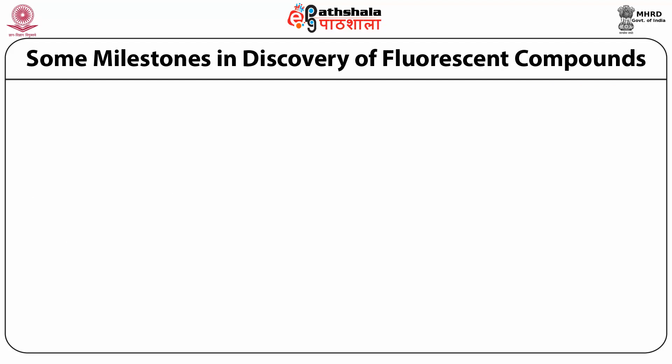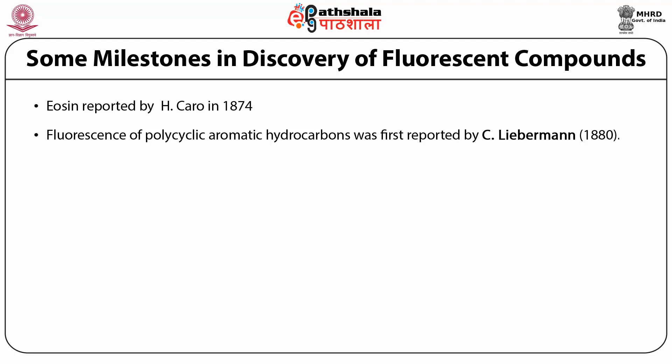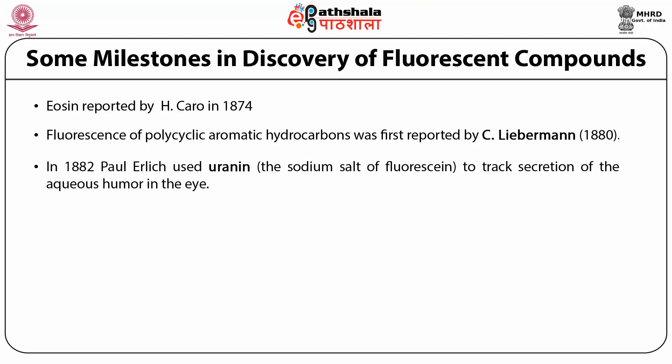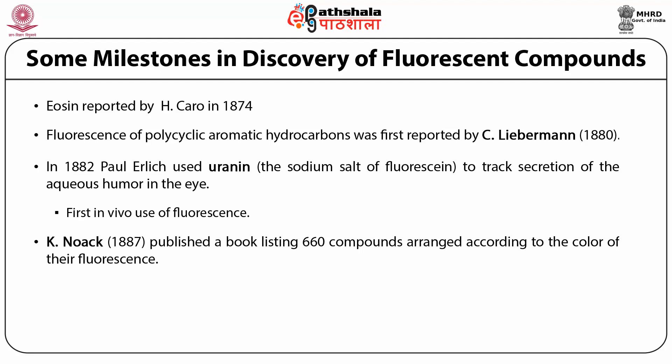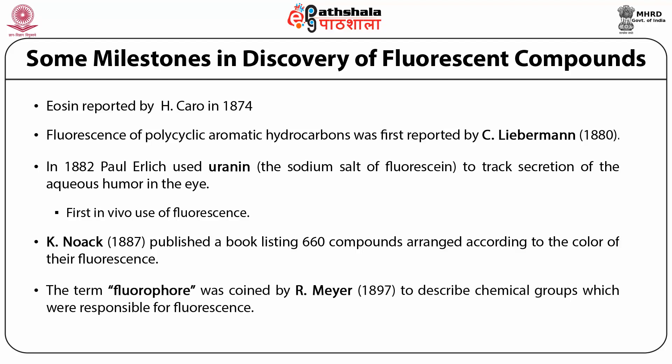Some milestones in discovery of fluorescent compounds: In 1874, the first fluorescent compound reported was eosin by H. Caro. Fluorescence of polycyclic aromatic hydrocarbons was first reported by C. Liebermann in 1880. In 1882, Paul Ulrich used uranium to track the aqueous humor in the eye — the first in vivo experiment using fluorescence technique. In 1887, K. Noack published a book listing around 660 compounds arranged according to the color of their fluorescence. The term fluorophore was first coined by R. Meyer in 1897 to describe chemical groups responsible for fluorescence — analogous to chromophore, first used in 1876 by Owen Witt to describe groups associated with colour.